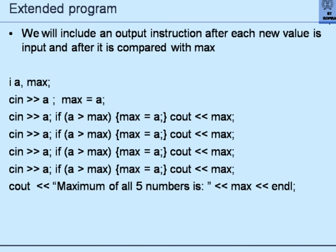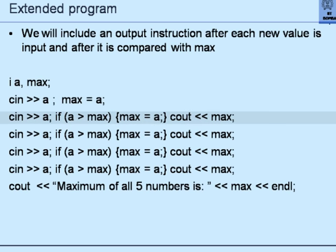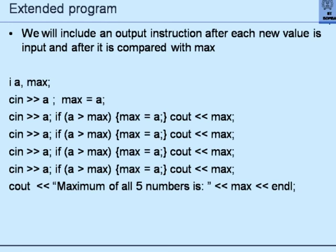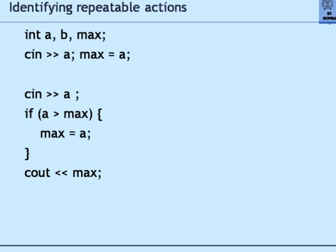I write 4 identical instructions and get the maximum of 5 numbers. To find the maximum of 100 numbers, I have to write the same instruction 99 more times. Each time an instruction is executed, it operates on a different value because we read a new value at the start of each group. This is the key identification: we have identified a block which can be executed repeatedly. In this block of 3 instructions, I add a fourth — an output statement after the assignment to max.